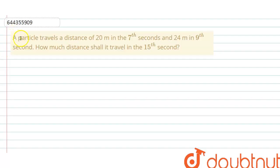Hello everyone, let me explain this question to you. A particle travels a distance of 20 meters in the 7th seconds and 24 meters in the 9th seconds. How much distance shall it travel in the 15th seconds?